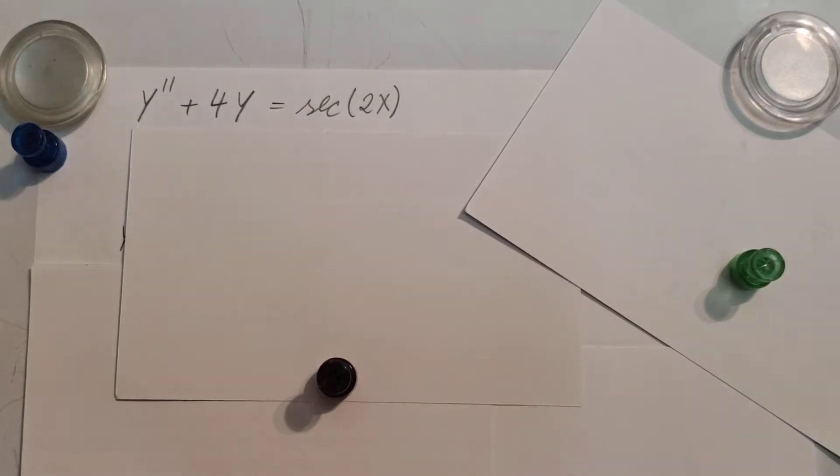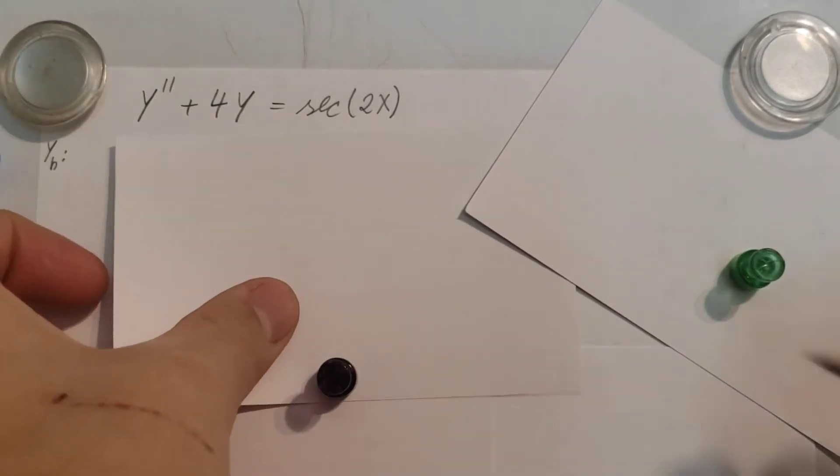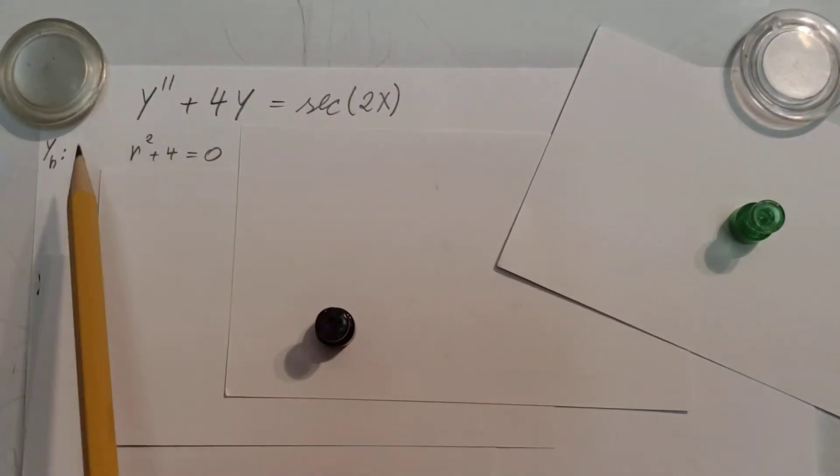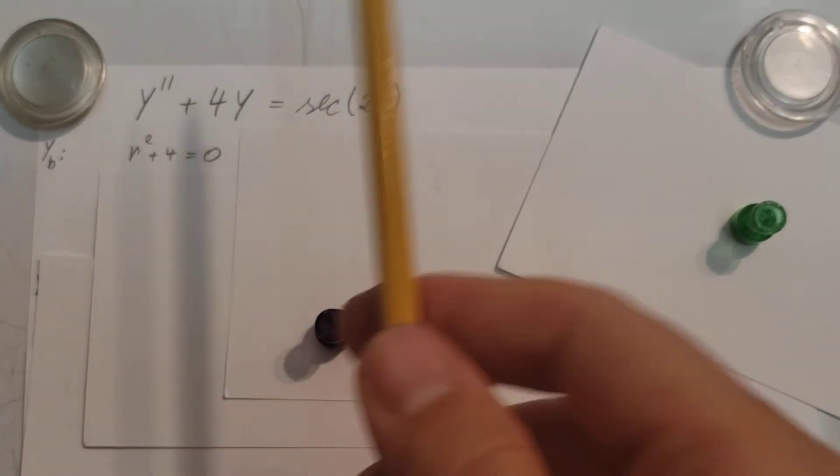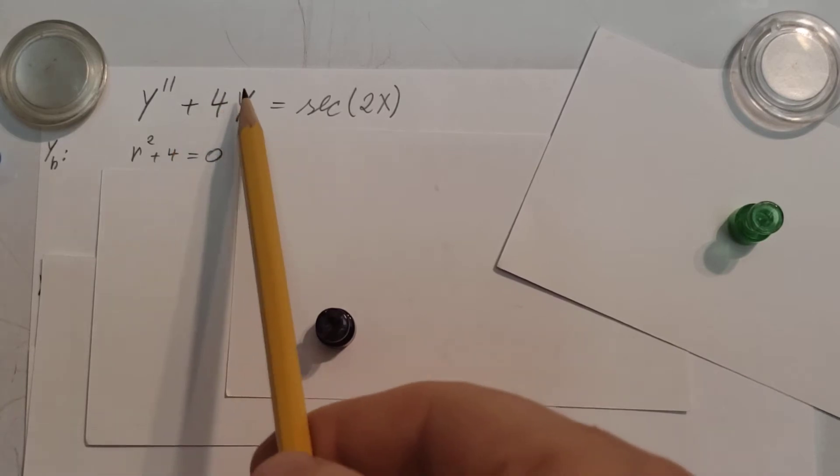So in this case I'm going to be using the variation of parameters method, the one with the Wronskian. To start off with, we're going to work on our yh, the homogeneous solution. That is y'' + 4y = 0. We're going to write the characteristic equation for it, which is r² + 4 = 0. Make sure you don't write an r accidentally here just because there's a y there.